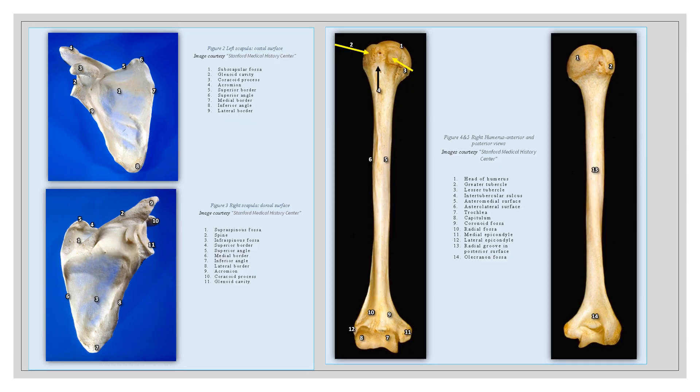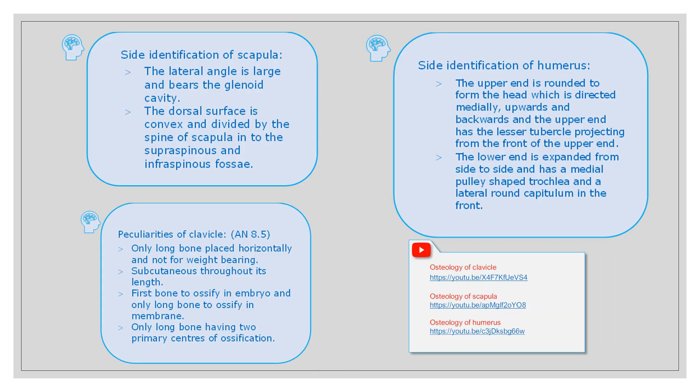These are the images of the osteology of the upper limb. This picture shows the left scapula costal surface and right scapula dorsal surface. This is the right humerus, anterior and posterior views. It is labeled and given in detail for the osteology of the upper limb. Side identification of the bones are given in boxes separately, including the peculiarities of the clavicle, side identification of scapula and humerus. Like this, in each chapter, YouTube links available are given separately.